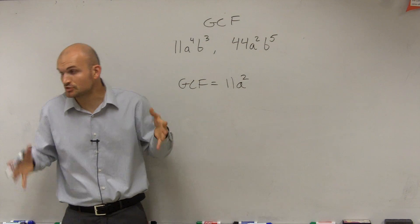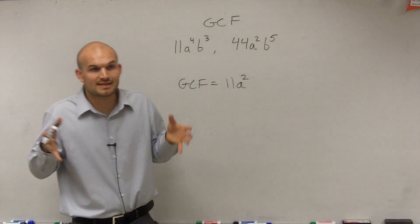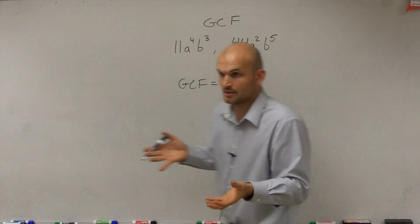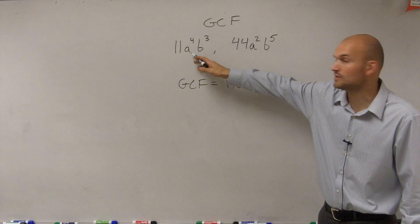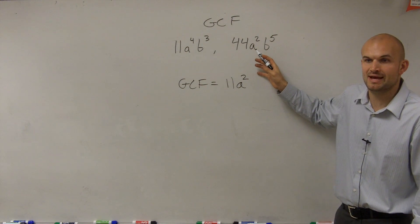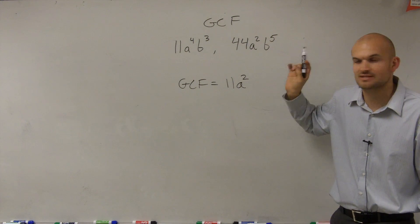Yeah, but we're not going to factor these. We're just trying to find the largest term that can divide into both of them, right? See, it can't be a cubed, because even though a cubed can divide into a to the fourth, a cubed cannot divide into a squared, right? It's the largest number that divides into both of them.